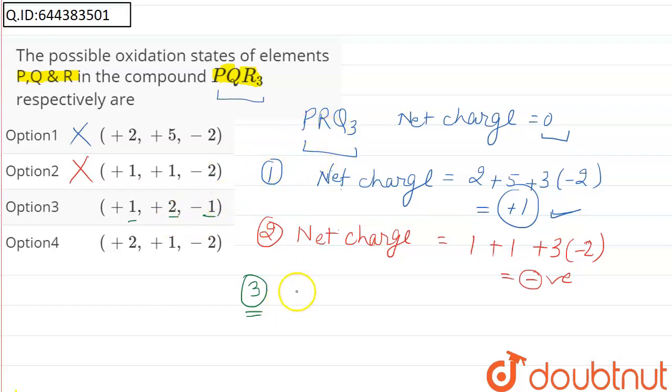So for the summation, net charge will be, net charge will be equal to 1 plus 2 plus 3 times minus 1. It comes 0 as it is required to be 0 for the element as no charge is given on this compound. So option 3 will be our answer. Thank you.